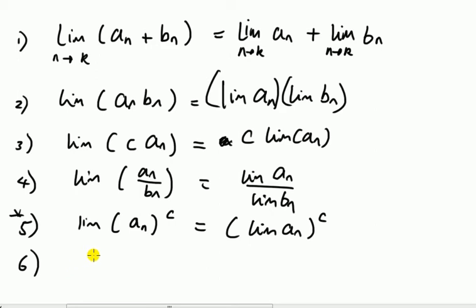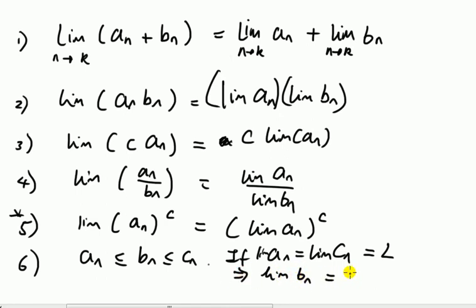And finally, something called the squeeze rule. Let's say we've got three expressions and they're related like this, so expression b_n is in between these two always for any n. Then if both the limit of a_n and c_n tend to the same thing l, and because this is sandwiched between the two, that implies that the limit of b_n will also equal l.